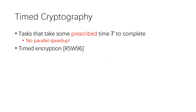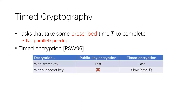Timed cryptography includes timed encryption, which was introduced by Rivest, Shamir, and Wagner in 1996. In standard public key encryption, if you have the secret key you can decrypt fast, but if you don't have the secret key then decryption would become infeasible.